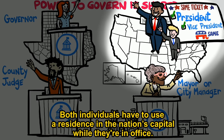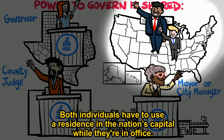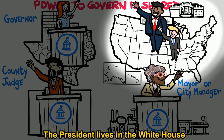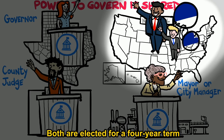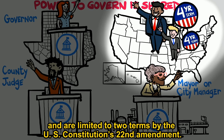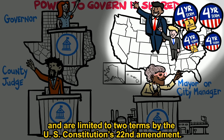Both individuals have to use a residence in the nation's capital while they're in office. The president lives in the White House, and the vice president has a home at the Naval Observatory. Both are elected for a four-year term and are limited to two terms by the U.S. Constitution's 22nd Amendment.